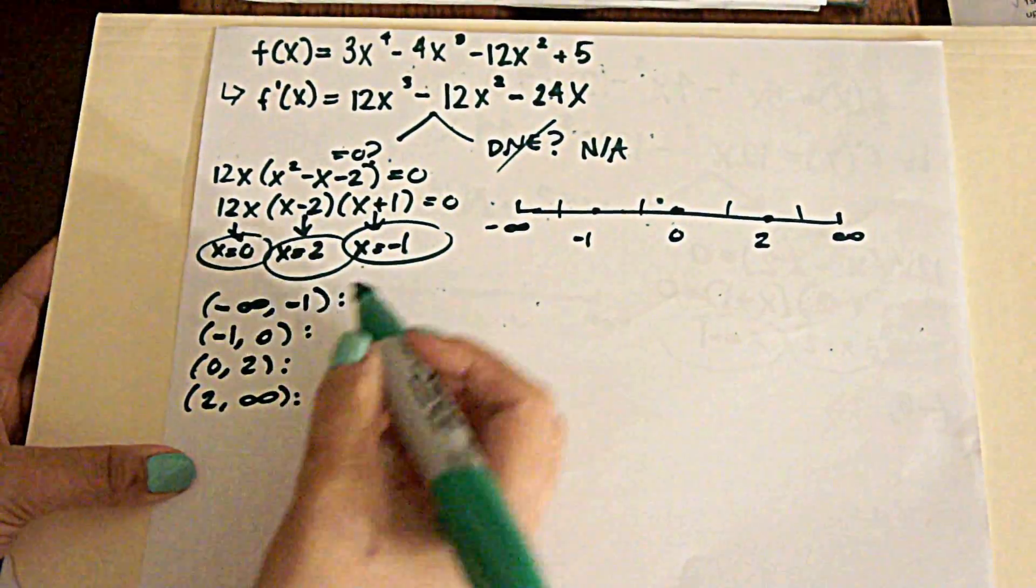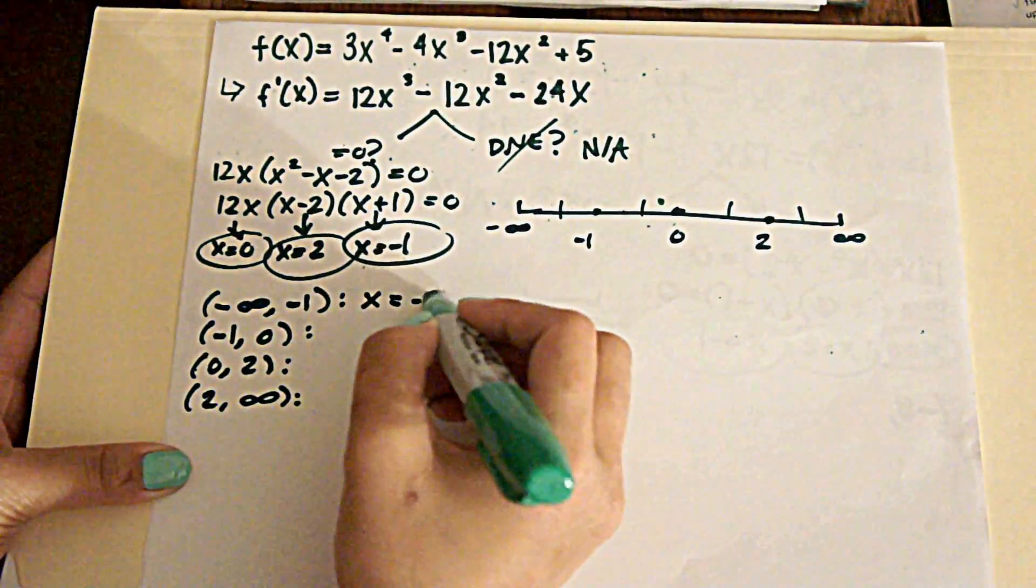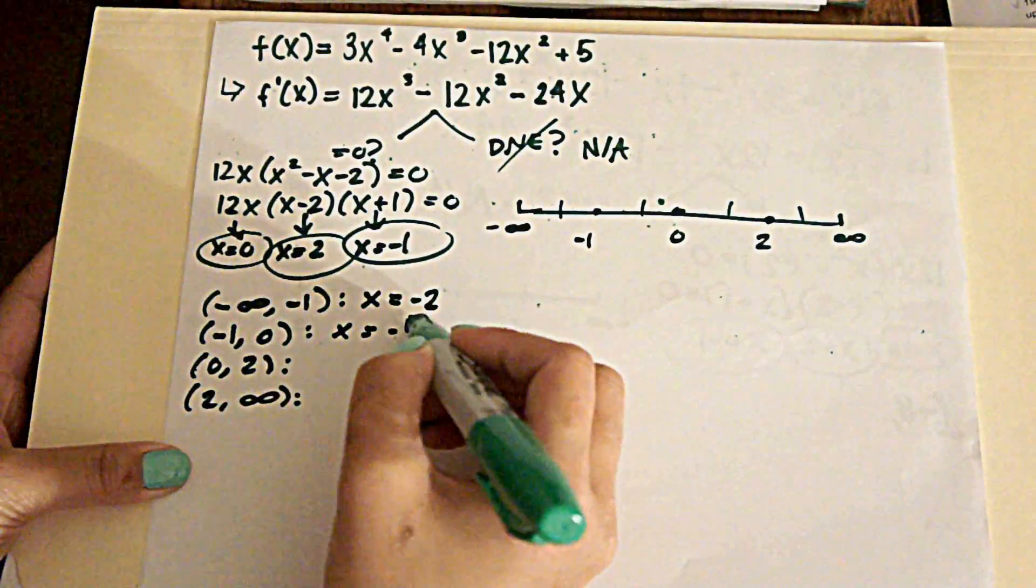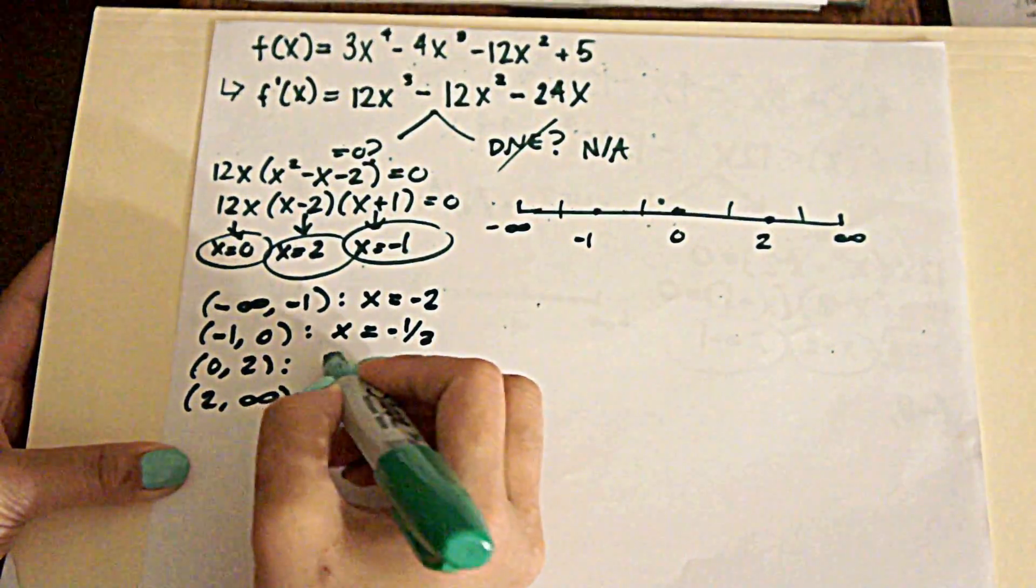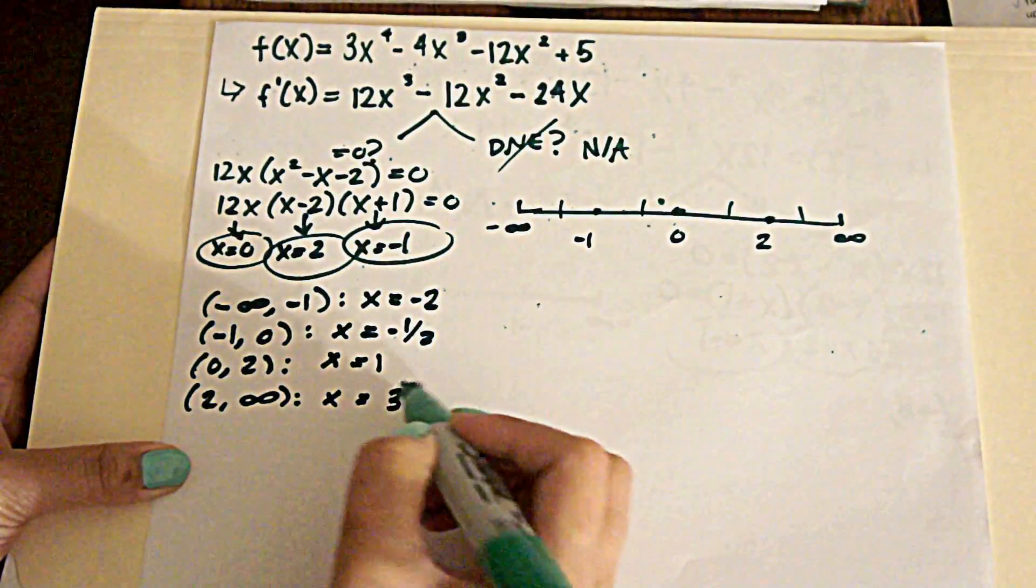Between negative infinity and negative 1, we would just choose a number. Negative 2 is fine. Here we would choose negative 1 half. Here we would choose 1. And here we would choose something like 3.